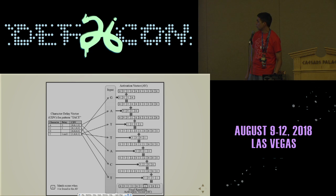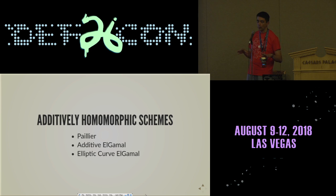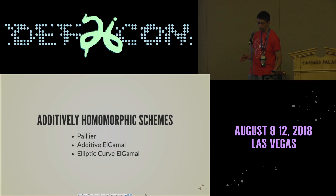In this protocol, we use an additively homomorphic encryption scheme — it can be Paillier, additive ElGamal, or elliptic curve ElGamal. One of the nice things is we make a few tweaks to allow us to use those latter two. Instead of actually looking for four, we subtract by four at every single spot, meaning we're really looking for zero.